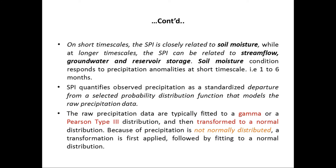SPI quantifies observed precipitation as a standardized departure from a selected probability distribution function that models the raw precipitation data. The raw precipitation data are typically fitted to a gamma or Pearson Type 3 distribution, then transformed to a normal distribution, because raw precipitation is not normally distributed. A transformation is first applied, followed by fitting to a normal distribution.